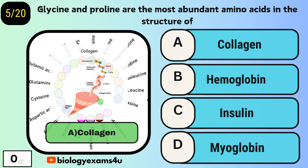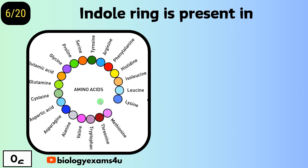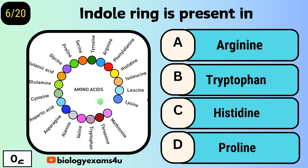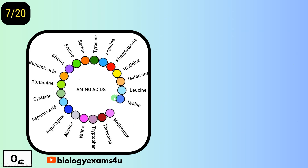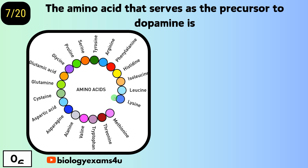Question number six: the indole ring is present in — option A, arginine; option B, tryptophan; option C, histidine; option D, proline. The answer is tryptophan, and this is the indole ring.